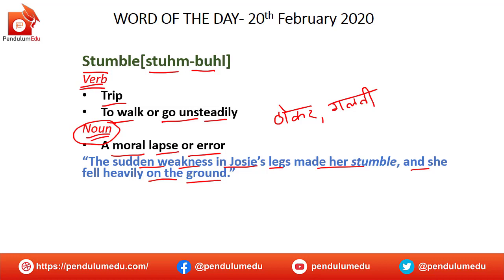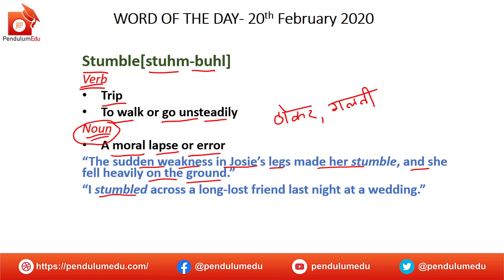The next sentence is: I stumbled across a long lost friend last night at our wedding. Toh bhoat time baad jo ek jok hoya hoa dhostan, us ke, aap usse mile, aap galti se unse, wedding pe aap unke saamne aay.